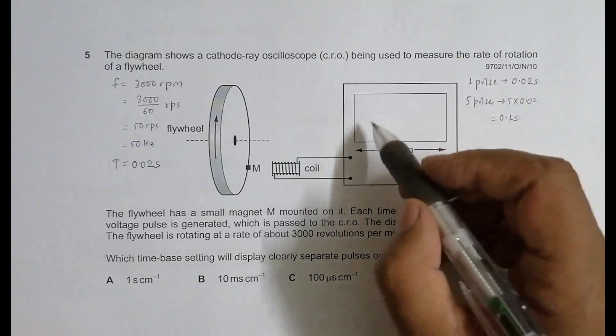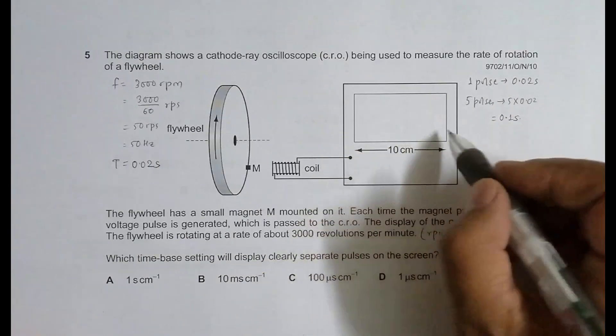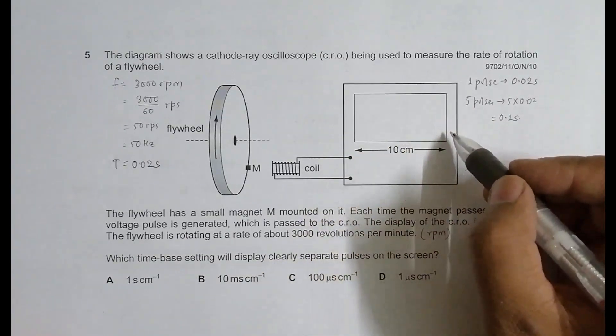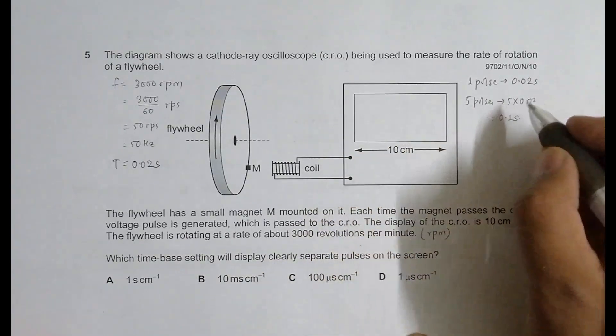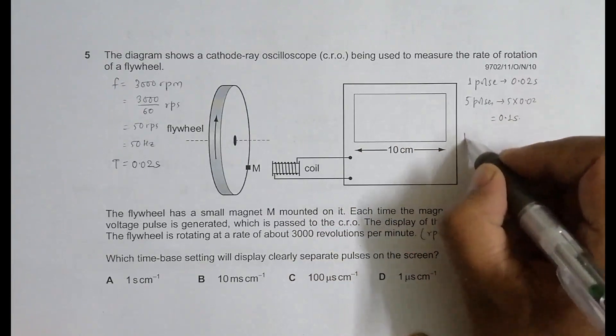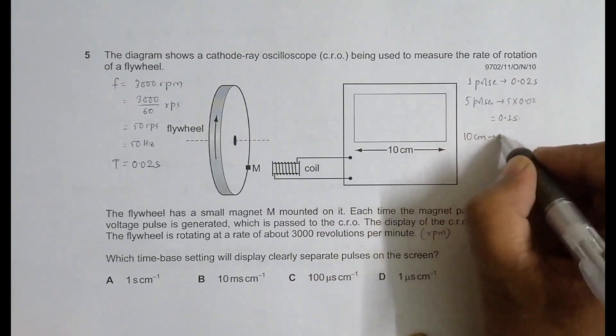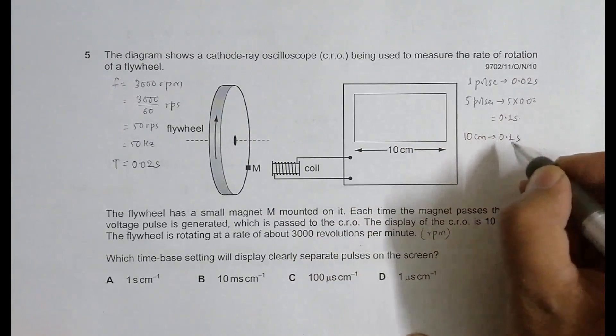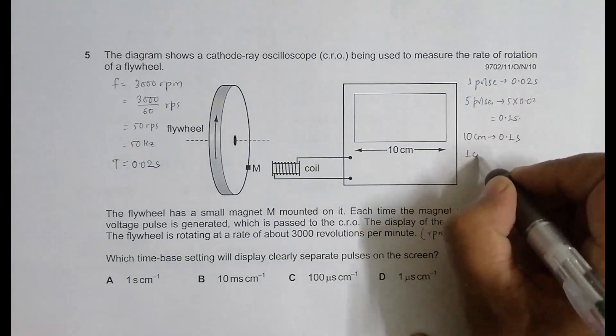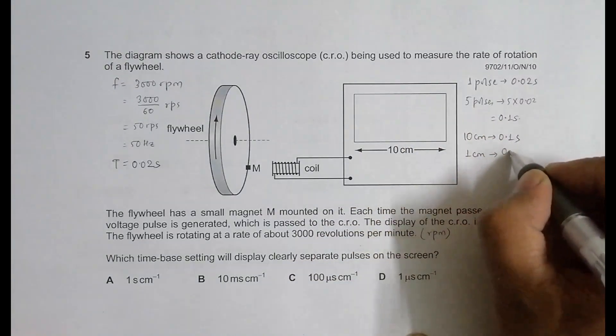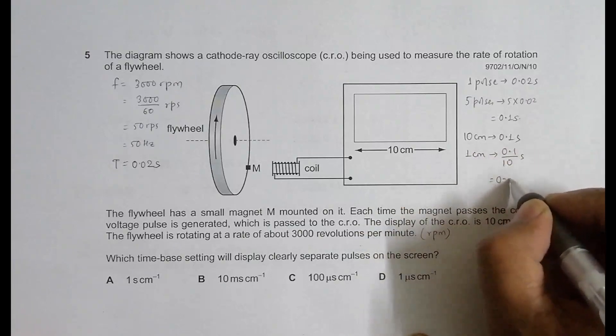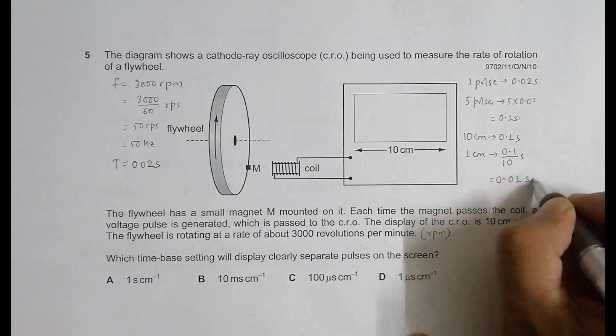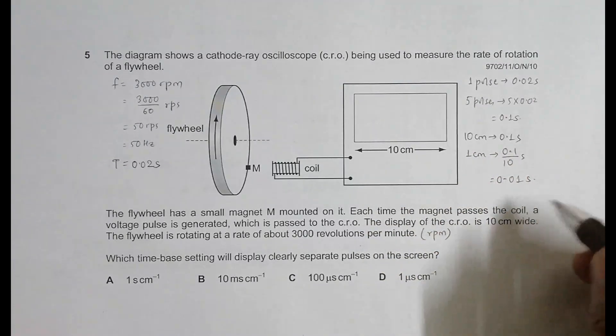If I have to adjust 5 pulses here, this whole screen should be 0.1 seconds. That means 10 centimeters equals 0.1 seconds. So 1 centimeter equals 0.1 divided by 10, which is 0.01 seconds per centimeter.